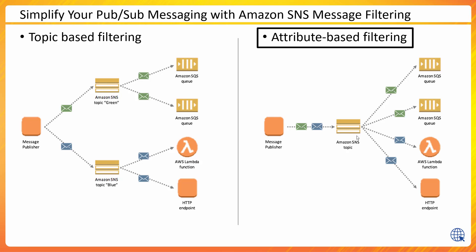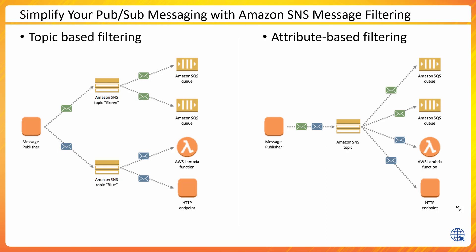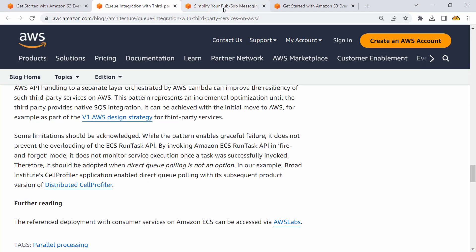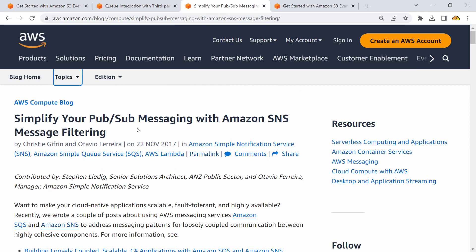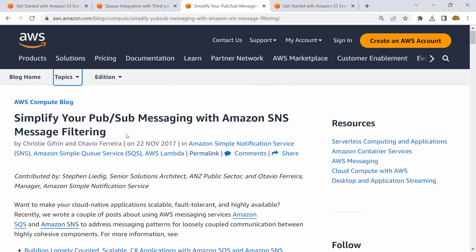You could use topic-based filtering or attribute-based filtering. Messages go from the publisher to the topic, and the topic has a filtering mechanism. Filtering happens at the topic level depending on the attributes you define, and then multiple different subscribers can access the appropriate information. This is shown in a blog post titled 'Simplify Your Pub/Sub Messaging with SNS Message Filtering.'